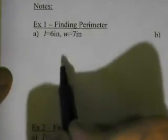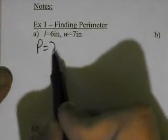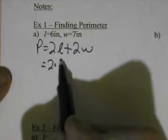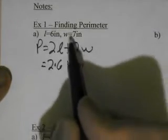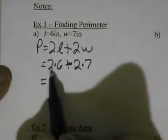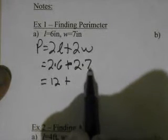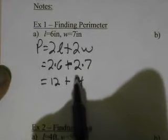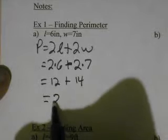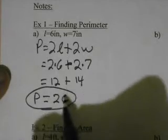Here we have a shape. Its length is 6 and its width is 7. Now the formula — two lengths plus two widths — means we're going to take 2 times the length of 6, plus 2 times the width, which is 7. Remember the order of operations: we have to multiply and divide before we add or subtract. So 2 times 6 is 12, plus 2 times 7, which is 14. 14 plus 12 gives us an answer of 26, so our perimeter of this rectangle would be 26 inches.